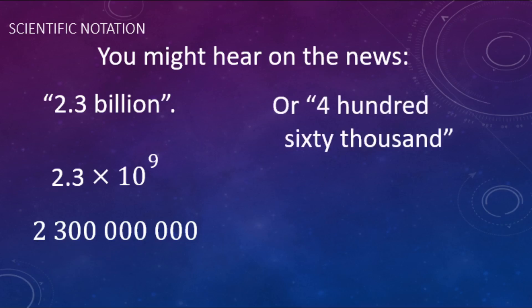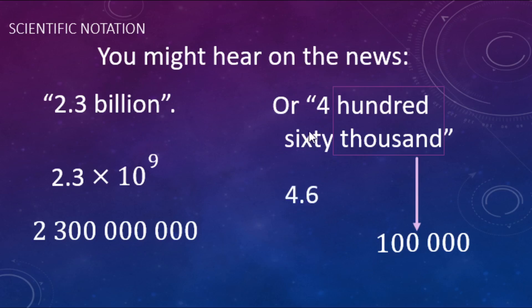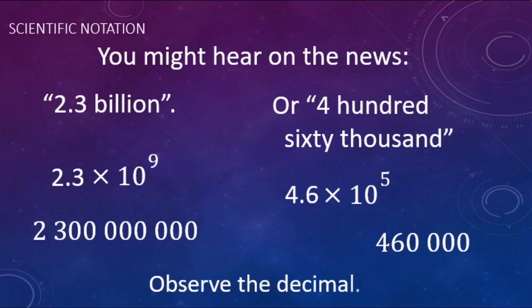Another number you might find in the news: 460,000. Remember 100,000 is a one followed by five zeros. When we write this in scientific notation we're going to write 4.6, and then times 10 to the — 100,000 has five zeros, so that's 10 to the fifth when we look at powers of 10. So 4.6 times 10 to the fifth. Pay attention to those decimal places and how far they move over.